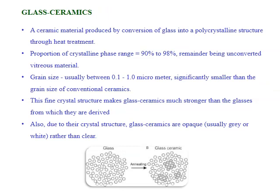The next type is glass ceramics. These are ceramics produced by heat treating glass. The main difference between glass and glass ceramics is their crystal structure. Glass has a highly amorphous structure with no regularity throughout the material. A ceramic material produced by conversion of glass into a polycrystalline structure through heat treatment is defined as glass ceramics. In glass ceramics, the crystalline phase ranges from 90 to 98%, with the remainder being unconverted amorphous vitreous material.